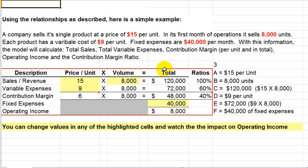Here we have a simple example. A company sells its single product at a price of $15 per unit. That sales price per unit is going to go into the model right here. In its first month of operations it sells 8,000 units, so the 8,000 will go into the volume of sales and revenue.